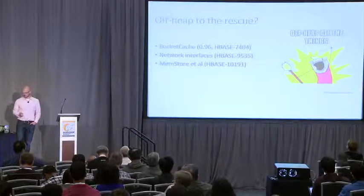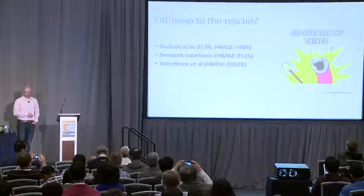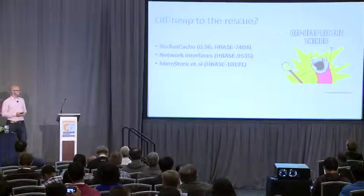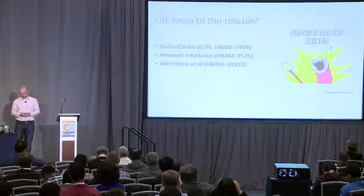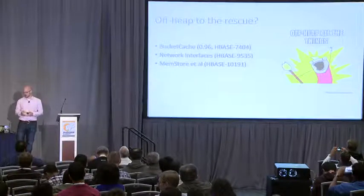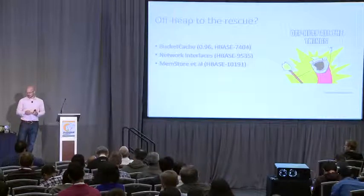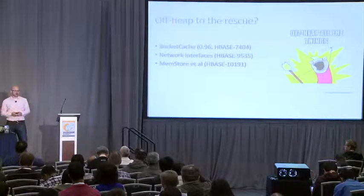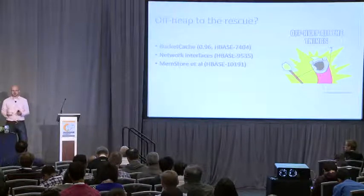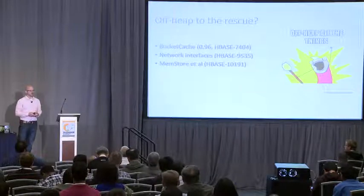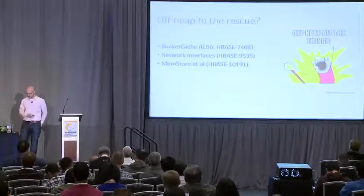If garbage collection is such a problem, why not just off-heap all the things? That's a legitimate question. We have the off-heap bucket cache, and we could also off-heap the memstore and other parts of the data flow pipeline — our interaction with network interfaces and with HDFS. There are tickets open and work in progress to see this done. However, HBase has been around a while with hundreds of person-hours invested, so this is a fundamental change to a fairly mature codebase requiring a lot of plumbing work.